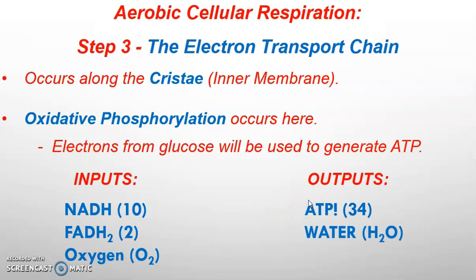Water will be produced as a waste product, and I'll show you where that gets produced. All of the oxidized electron carriers — the NAD+ and the FAD that are produced — will then diffuse back to any of the prior processes: glycolysis, the Krebs cycle, and the prep step, so they can be reused again and get reduced in the further breakdown of more glucose molecules.